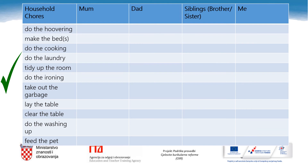Under household chores you can see: do the hoovering, make the beds, do the cooking, do the laundry, tidy up the room, do the ironing, take out the garbage, lay the table, clear the table, do the washing up, and feed the pet. Under family members you have mom, dad, siblings — which means brother or sister — and me.